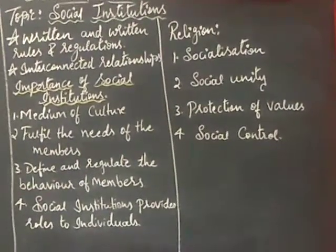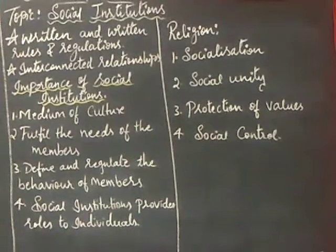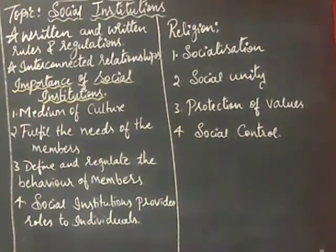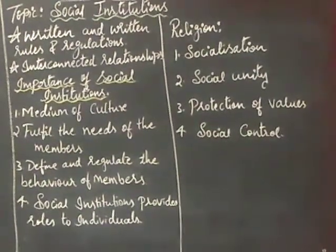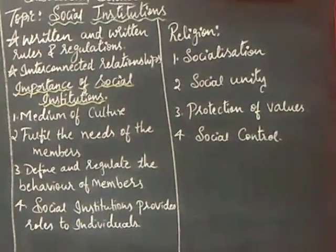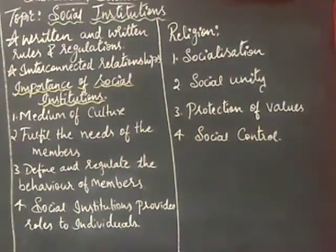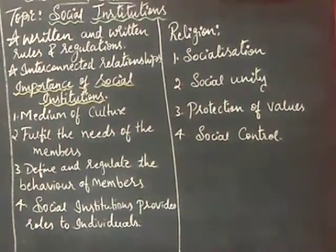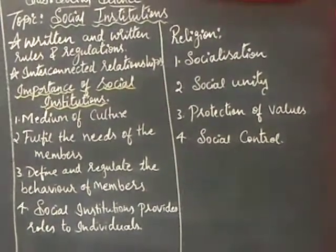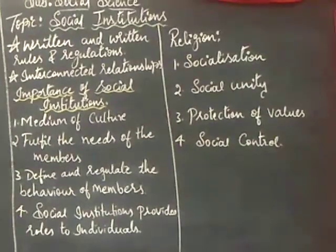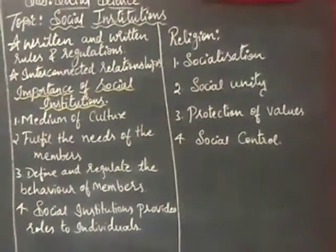Next, let us move to religion. Religion is another social institution born in society, called socialization. Religion is one of the main mediums of socialization that gives us moral values, truthfulness, patience, peace, and sacrifice. Next comes social unity — religion fosters unity, honesty, and non-violence. Religious values aid social unity, and by employing symbols and customs, religion creates unity among the members.